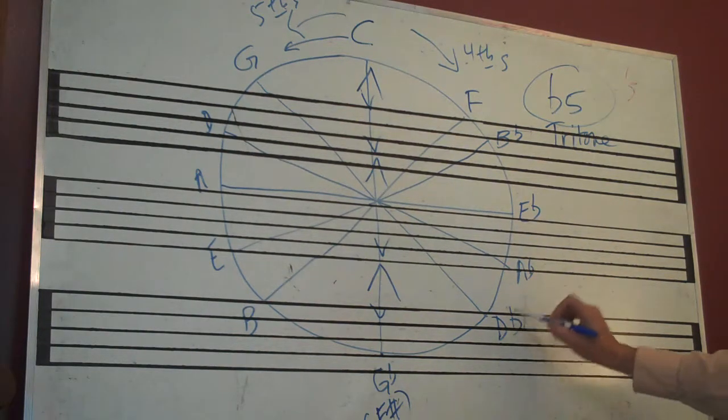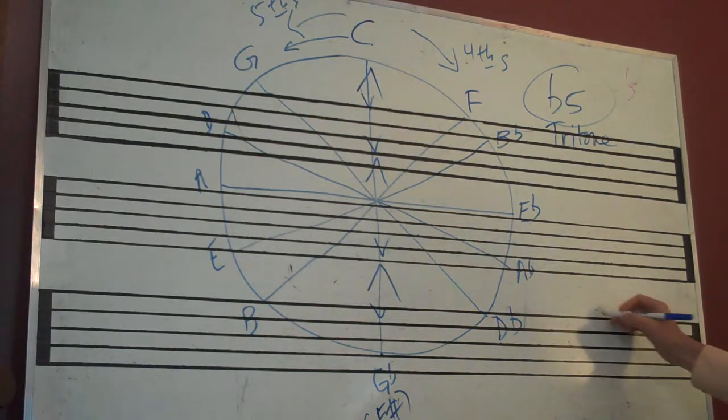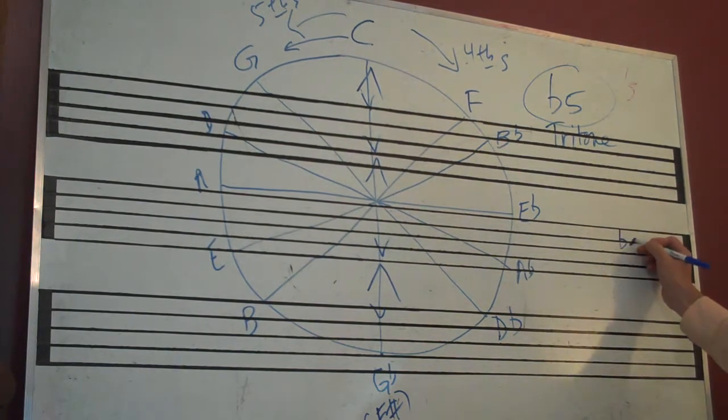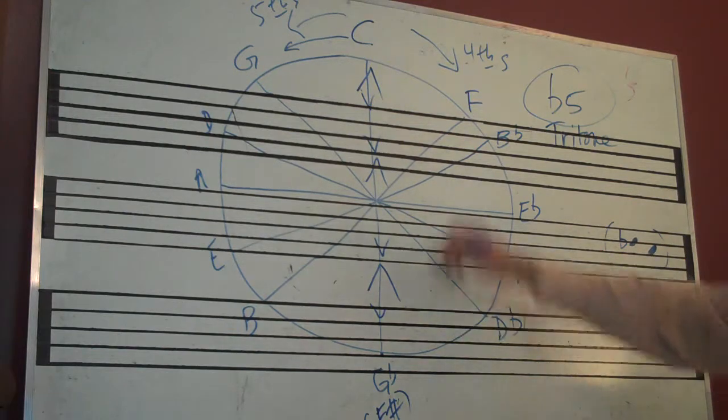If we take this D-flat and flatten it by a half step—think about that—D-flat, if you flatten that by a half step, what do you got? You got C, right?